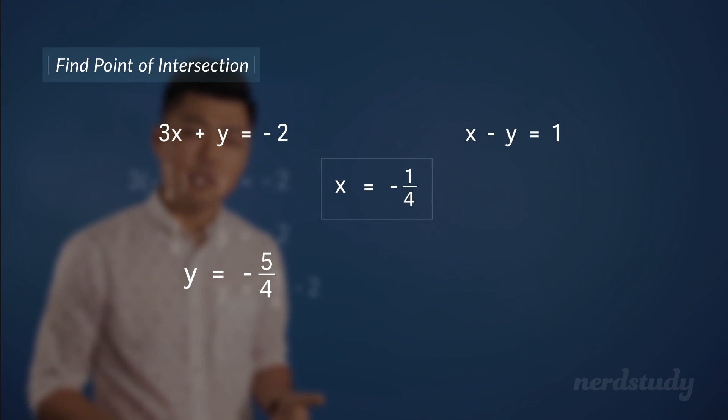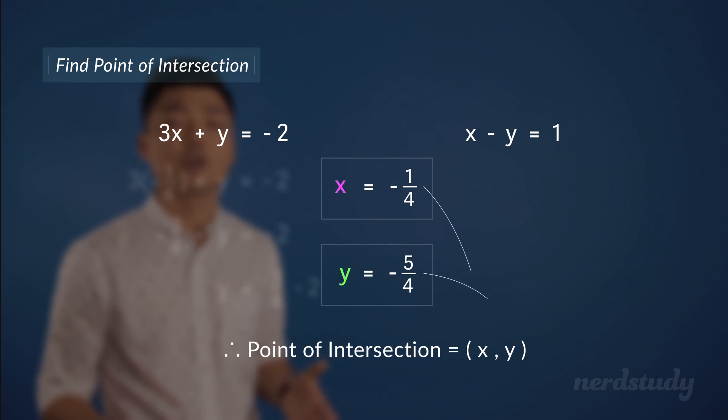The question is, if we plug in x equals negative one over four into the other equation, would we also get y equals negative five over four? If so, we know that this truly is an intersection point, that we have found our solution. Let's try it out.